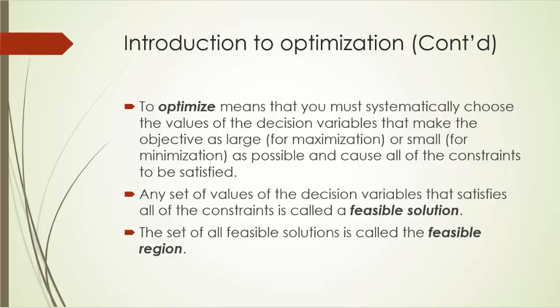Optimization means that you must systematically choose the values of the decision variables to make the objective as large as possible in the case of maximization, or to make the objective as small as possible in the case of minimization, and make sure that all the constraints are satisfied in the meantime.